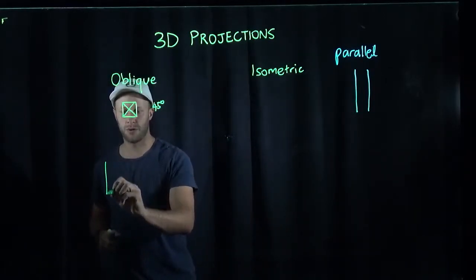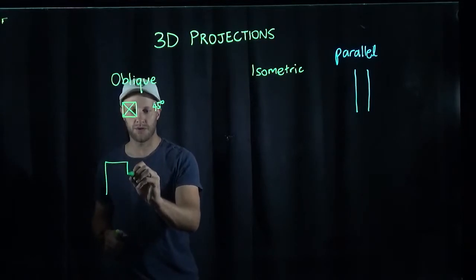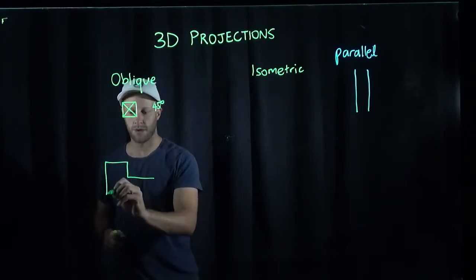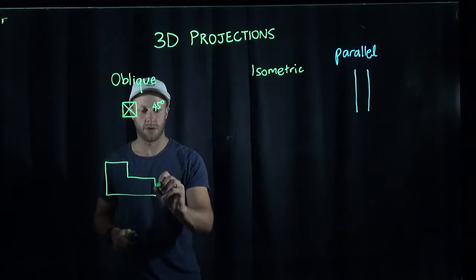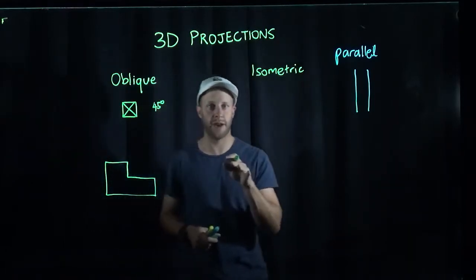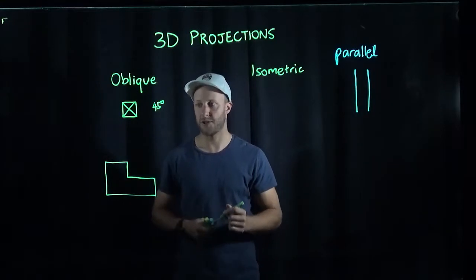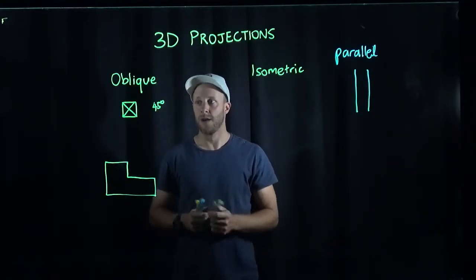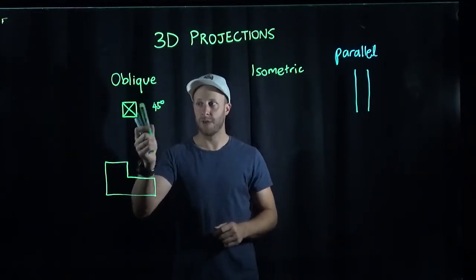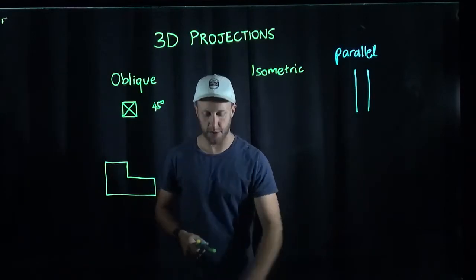So if I draw this shape, I draw as though I'm looking straight at the view. So this is a two-dimensional view of that particular shape. Now, the key to doing this three-dimensional is that I use 45 degree lines.